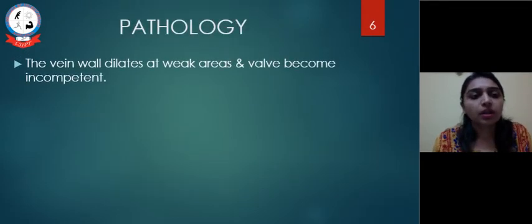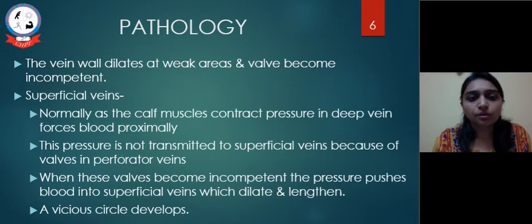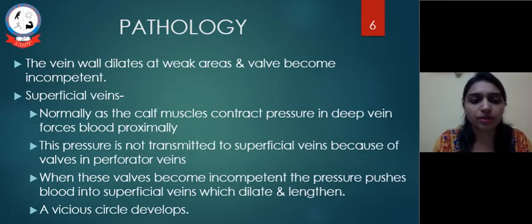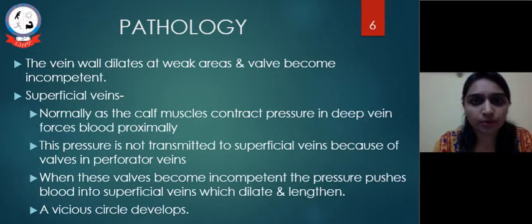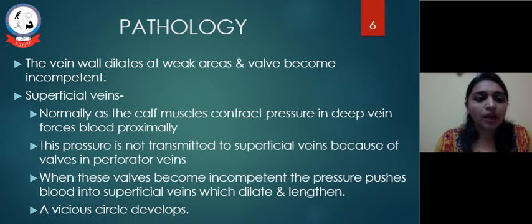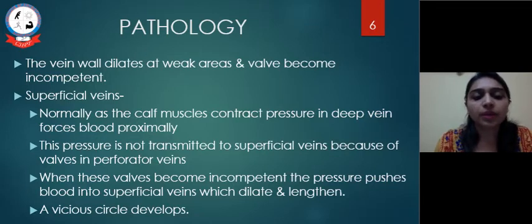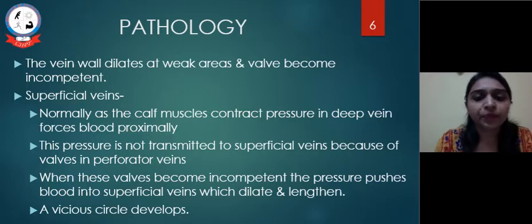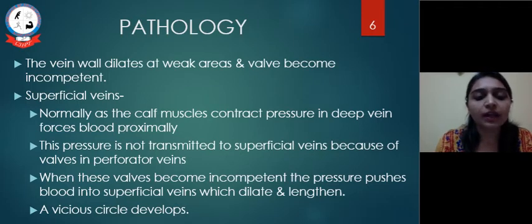Pathology: The vein dilates at weak areas and the valve becomes incompetent. This is usually seen in superficial veins, as normally calf muscle contraction occurs and pressure in the deep veins forces blood proximally towards the heart. This pressure is not transmitted to superficial veins because of valves in the perforator veins. When these valves become incompetent, pressure pushes blood into the superficial veins, which dilate and lengthen.